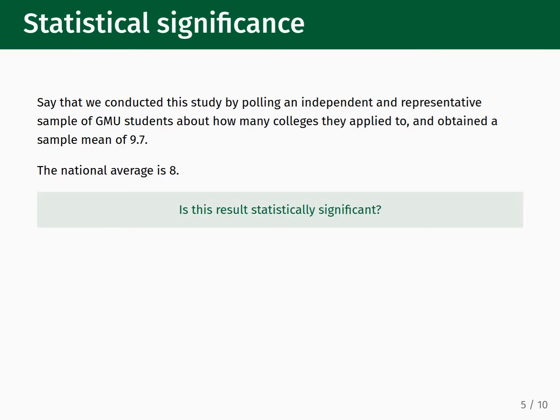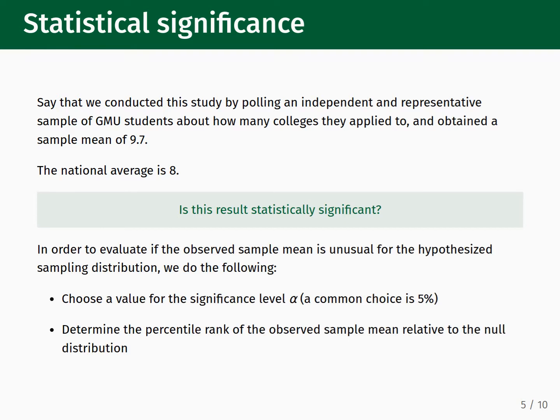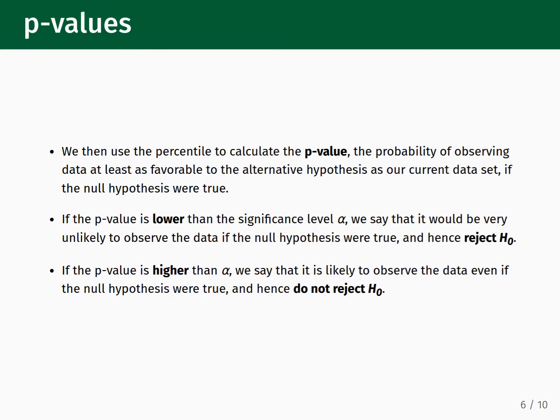When we are conducting a hypothesis test — for example, for the college application scenario we are considering — what we are doing is checking whether our observed result, which here would be a sample mean of 9.7, is statistically significant when compared against the null result, which here would be the national average of 8. If it is, then this would mean that random variations due to sampling cannot explain the observed result. In order to evaluate if the observed sample mean is unusual for the hypothesized sampling distribution, we choose a value for the significance level alpha — a common choice is 5% — and we determine the percentile rank of the observed sample mean relative to the null distribution, which allows us to calculate a p-value.